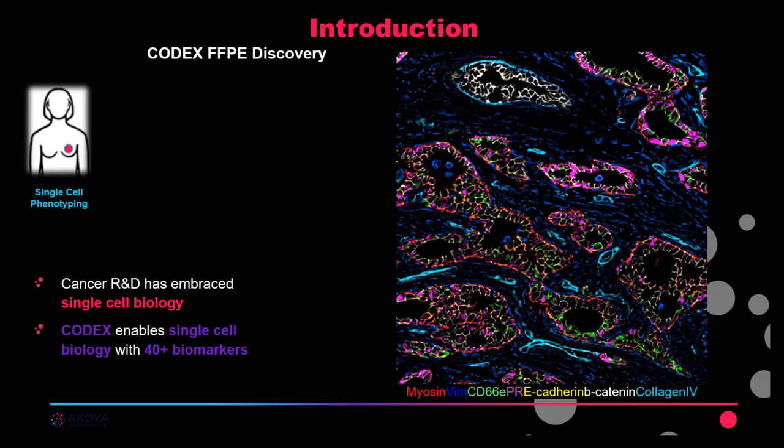Our dataset today is a breast cancer tissue stained with 36 different markers. These markers are broadly characterized as structural, functional, or markers that indicate cell status. In this image we're seeing markers like E-cadherin, vimentin, and collagen which are structural.